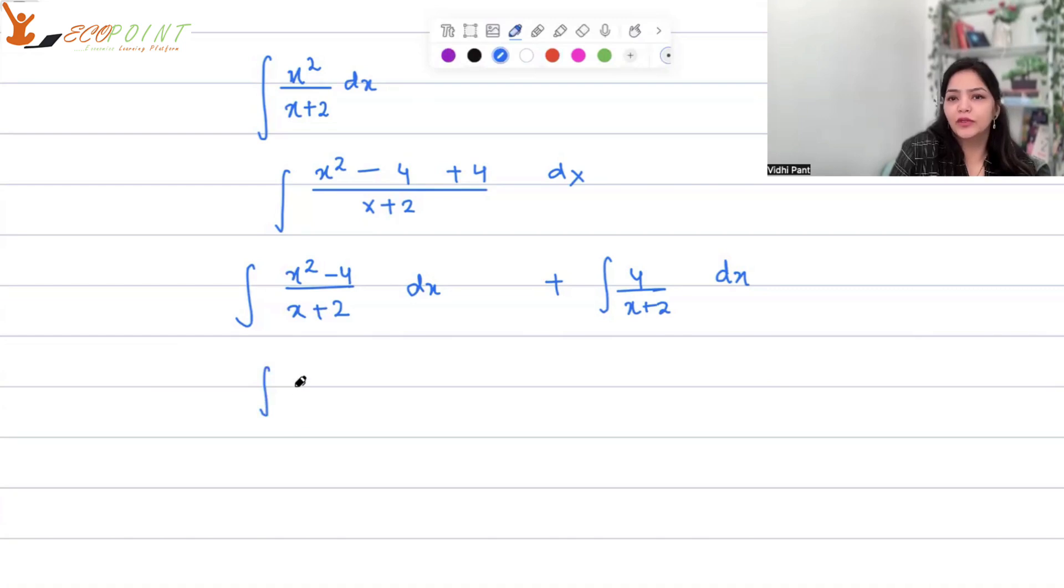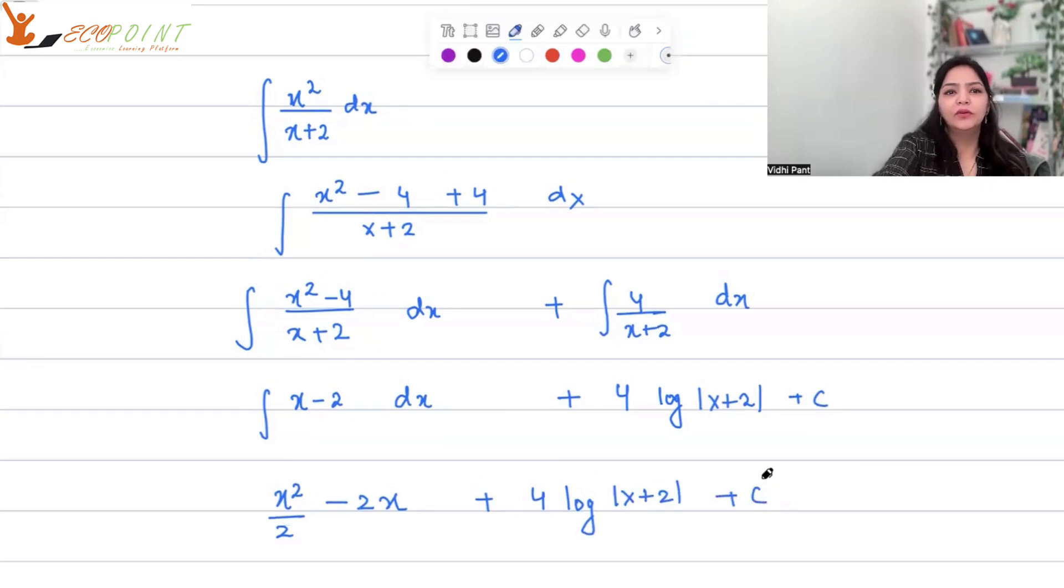Here you can use a square minus b square and you will get integral of x minus 2 dx, and here you will directly integrate this, and the integral will be 4 log mod x plus 2 plus c. Here if you integrate you get x square by 2 minus 2x. So the total answer is x square by 2 minus 2x plus 4 log mod x plus 2 plus c.